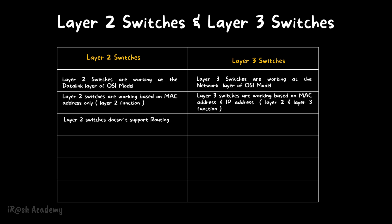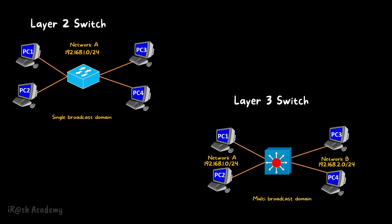Point number three: layer 2 switches do not support routing, but layer 3 switches support routing. Routing is the process of transferring data from one network to a different network. Layer 2 switches do not support the routing function. In a layer 2 switch, four PCs connected to one single switch form a single network — for example, network A with IP address range 192.168.1.0/24. Layer 2 switches have a single broadcast domain and can only do data transfer within the same network.